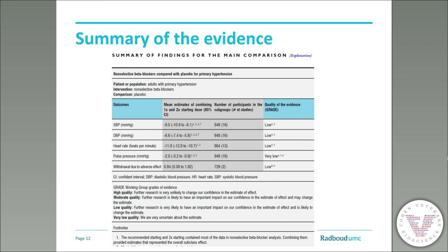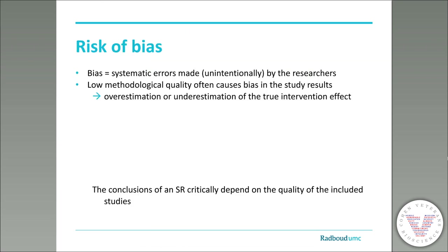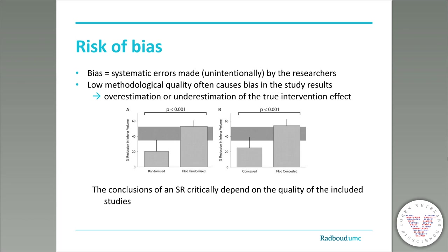When we talk about risk of bias, we are talking about limitations in the execution and design of studies that cause systematic differences between experimental and control groups not due to the effect of the intervention — in other words, systematic errors unintentionally made by researchers. This bias can cause overestimations or underestimations of the true intervention effect. For example, not randomizing the allocation of participants to study groups may cause baseline differences not caused by the intervention. Both not randomizing and not blinding outcome assessments can overestimate the effect in a systematic review or meta-analysis.